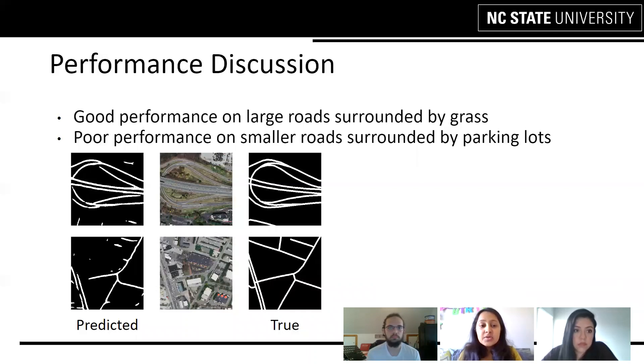Another thing that we observed was that roads that are surrounded by grass had better performance than roads that were surrounded by parking lots. We can see that in the images here, the top row has the predicted and the true masks for roads that are surrounded by grass. Whereas the bottom row has the predicted and true masks for the roads that are surrounded by parking lots. And we can see that in the bottom row, the prediction is not as clear as the one in the top row.